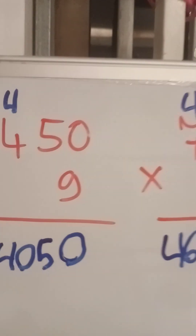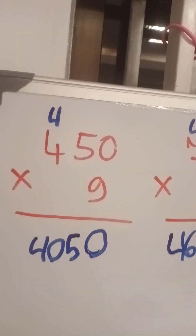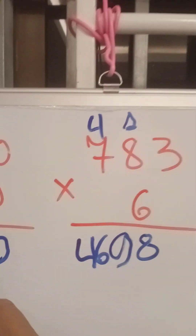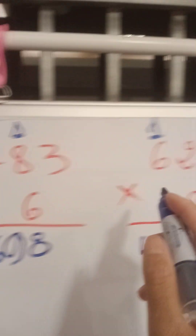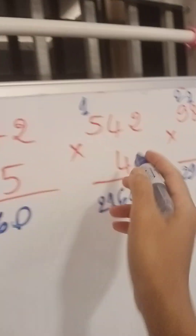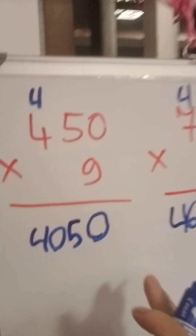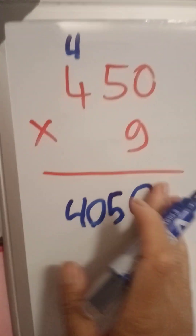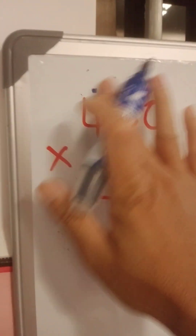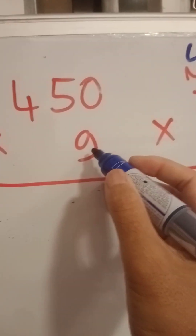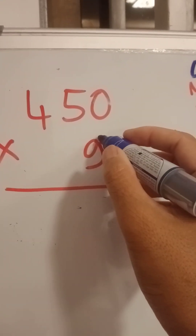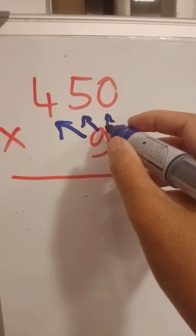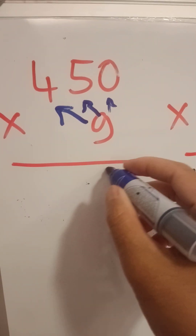Hello everyone, today we show you how to multiply with this exercise. We have seven exercises. The first answer is 4050, so how do we do it? You can see here we multiply with nine: nine with zero, nine with five, nine with four. Nine with zero is zero.